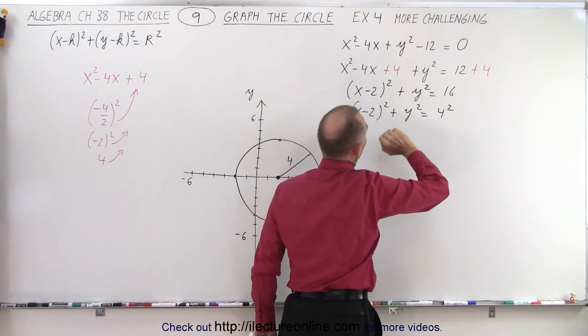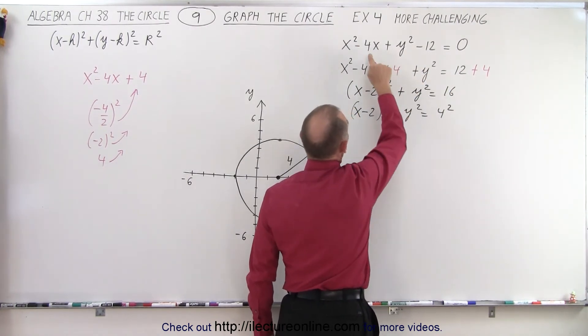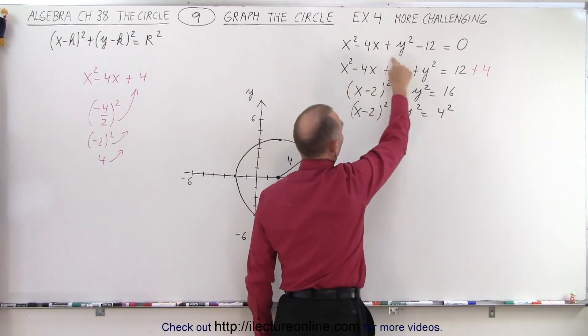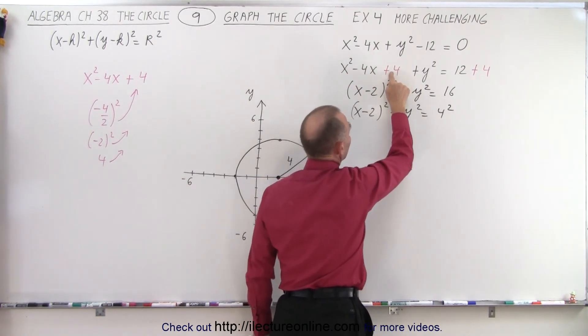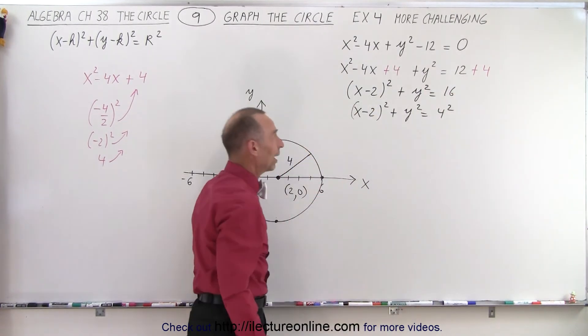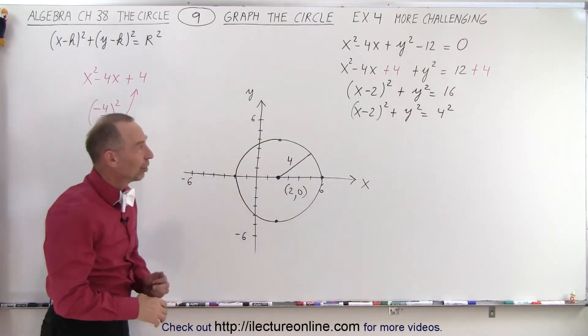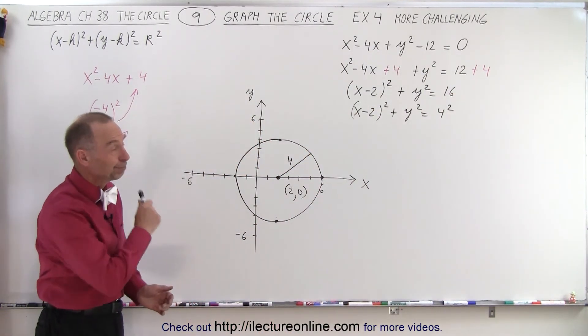Then we realize we have a y squared already. We don't have a y to the first power term, so that's simply y squared. And here we do have an x to the first power, so we need to have a perfect square. We need to add a 4 to the left, which means we need to add a 4 to the right. And then we can transform it to the right format. And that is how it's done.